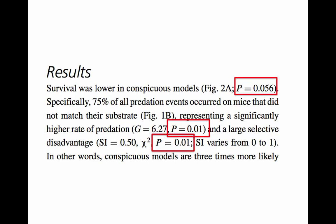Here is an example from a real article. You can see that the authors are describing in words the results that they got, and then they're giving you the p-values from the statistical tests that they ran. Here are several examples of p-values, and you'll also notice, circled in blue, several references to figures or graphs summarizing their data.